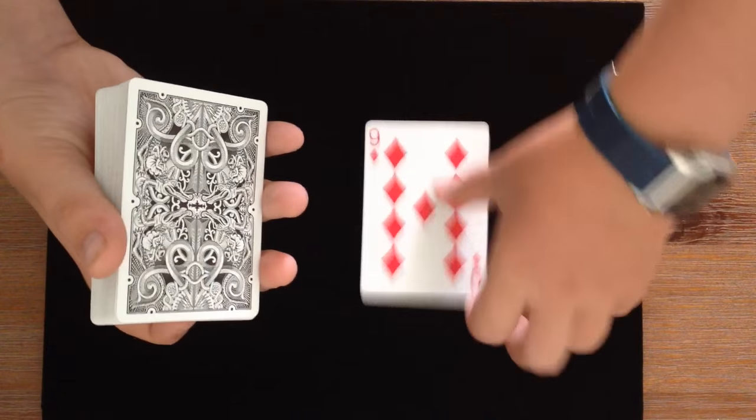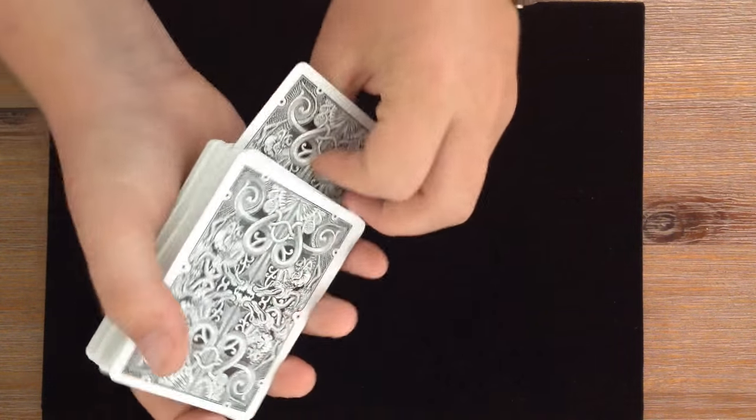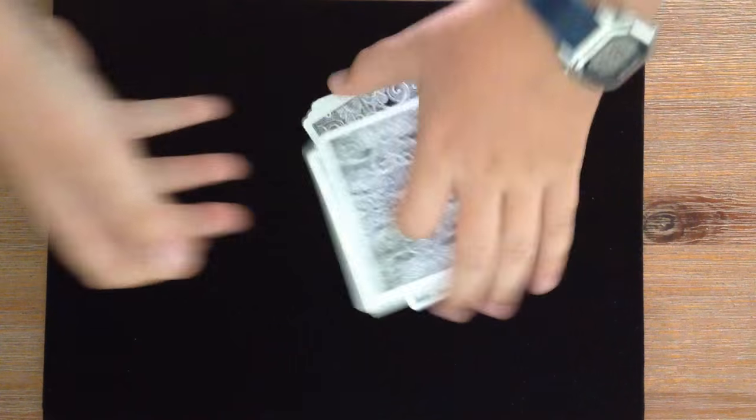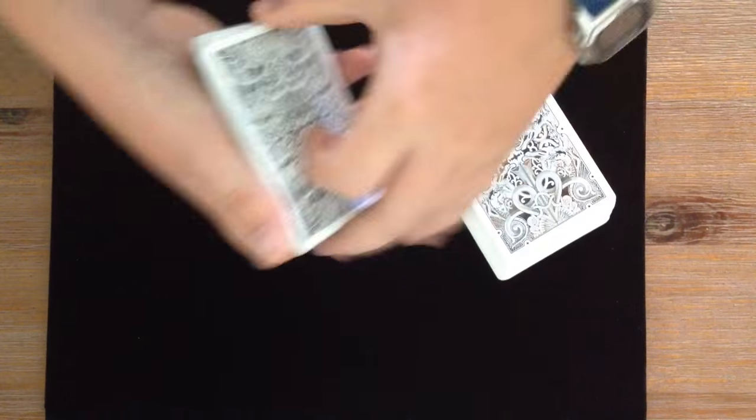I'll take the nine and I'll place it right around about center, just like that. That looks around about center. I can push it in, give these a couple of cuts, and give them a couple of table cuts.